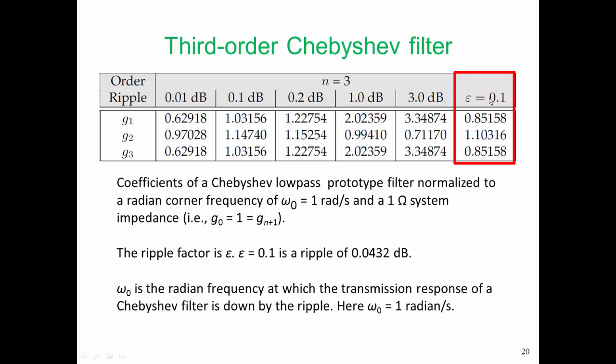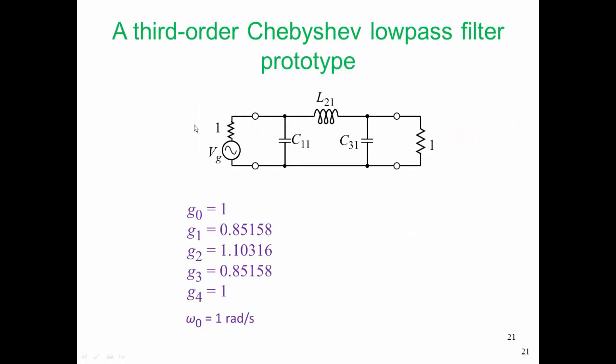We take the g values from this table. So we have g1, g2, and g3. Here is our filter. Now it turns out that this element here is g0. And even though it is not listed in the table, g0 and also g n plus 1, which is g4 here, because we're dealing with a third order filter.